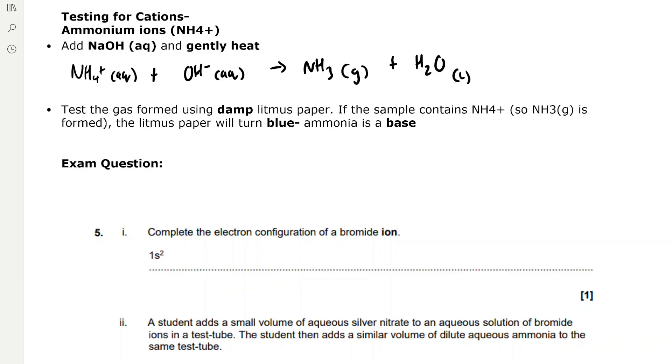We can then test the gas formed using damp litmus paper so we can hold it over the end of the test tube as we heat it. If the sample contains ammonium ions NH4 plus, so NH3 gas is formed, the litmus paper will turn blue because ammonia is a base.